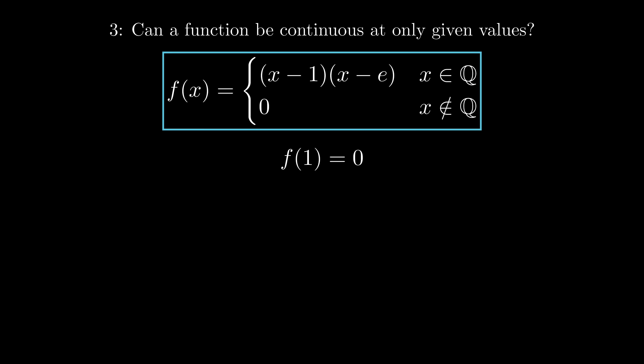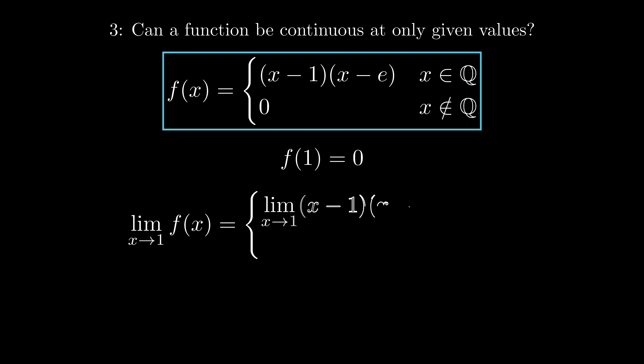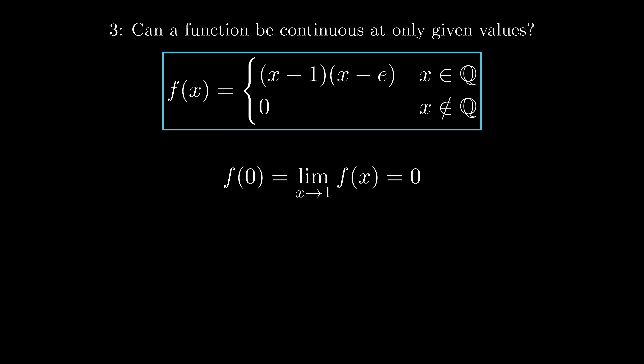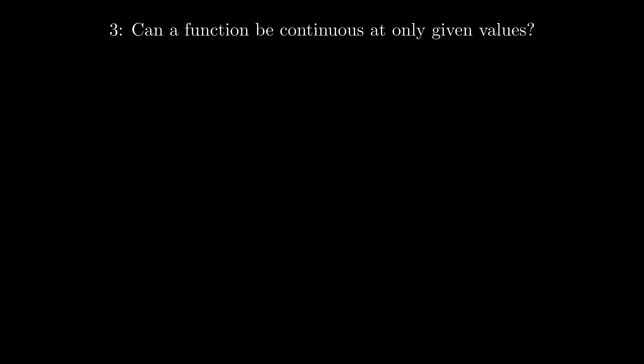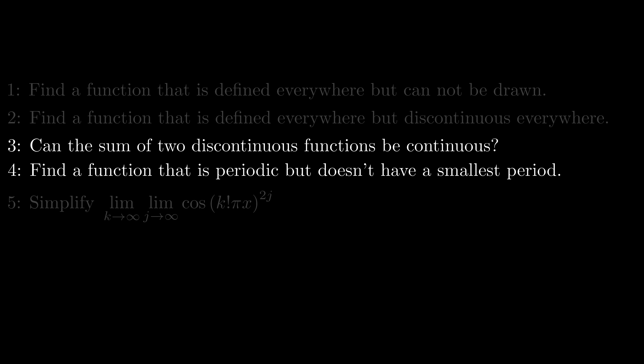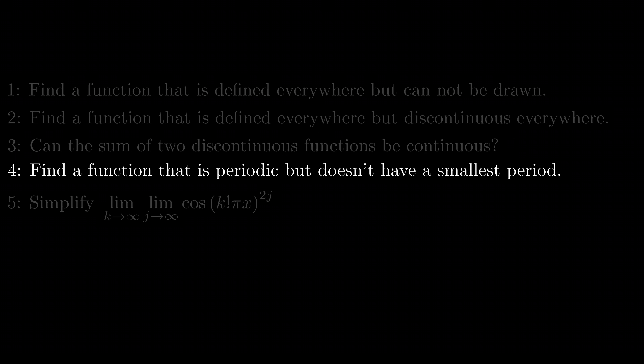f(1) is exactly zero, and the limit of f(x) as x goes to one has two cases: when x is rational, f(x) approaches zero as a polynomial; when x is irrational, f(x) is already zero. Therefore the value at one equals the limit as x goes to one. The exact same argument works for x equals e. You can extend this trick to construct functions continuous only at integers, which is crazy. The answer to the third question is still the Dirichlet function.